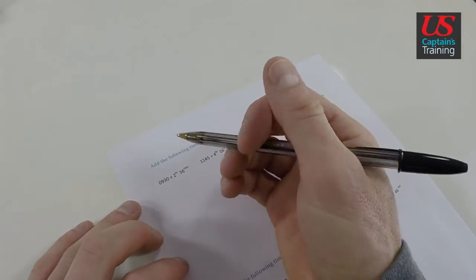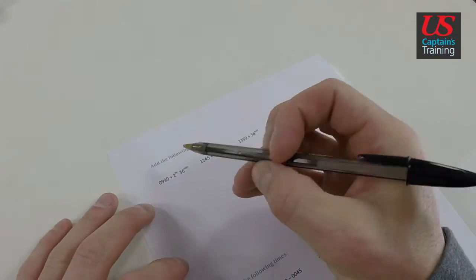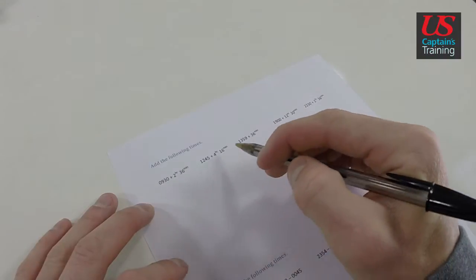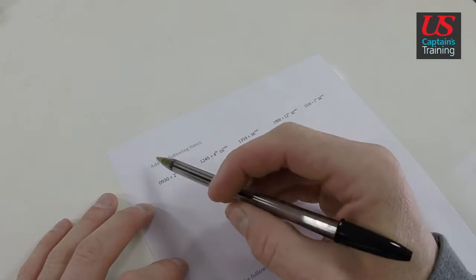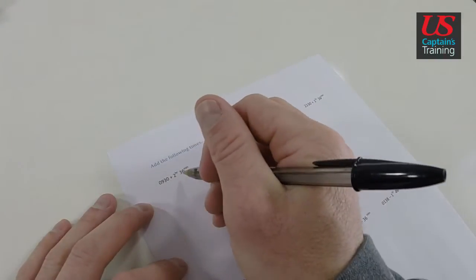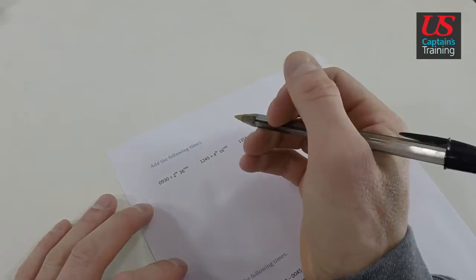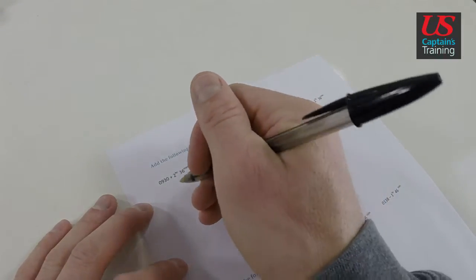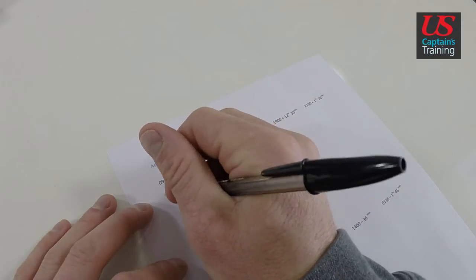Let's take a couple minutes to do adding time practice problems. See at the top it says add the following times. And now here we get 9:30 plus 2 hours and 36 minutes. So I'm going to set it up just like we're used to seeing: 9:30 plus 2 hours and 36 minutes.